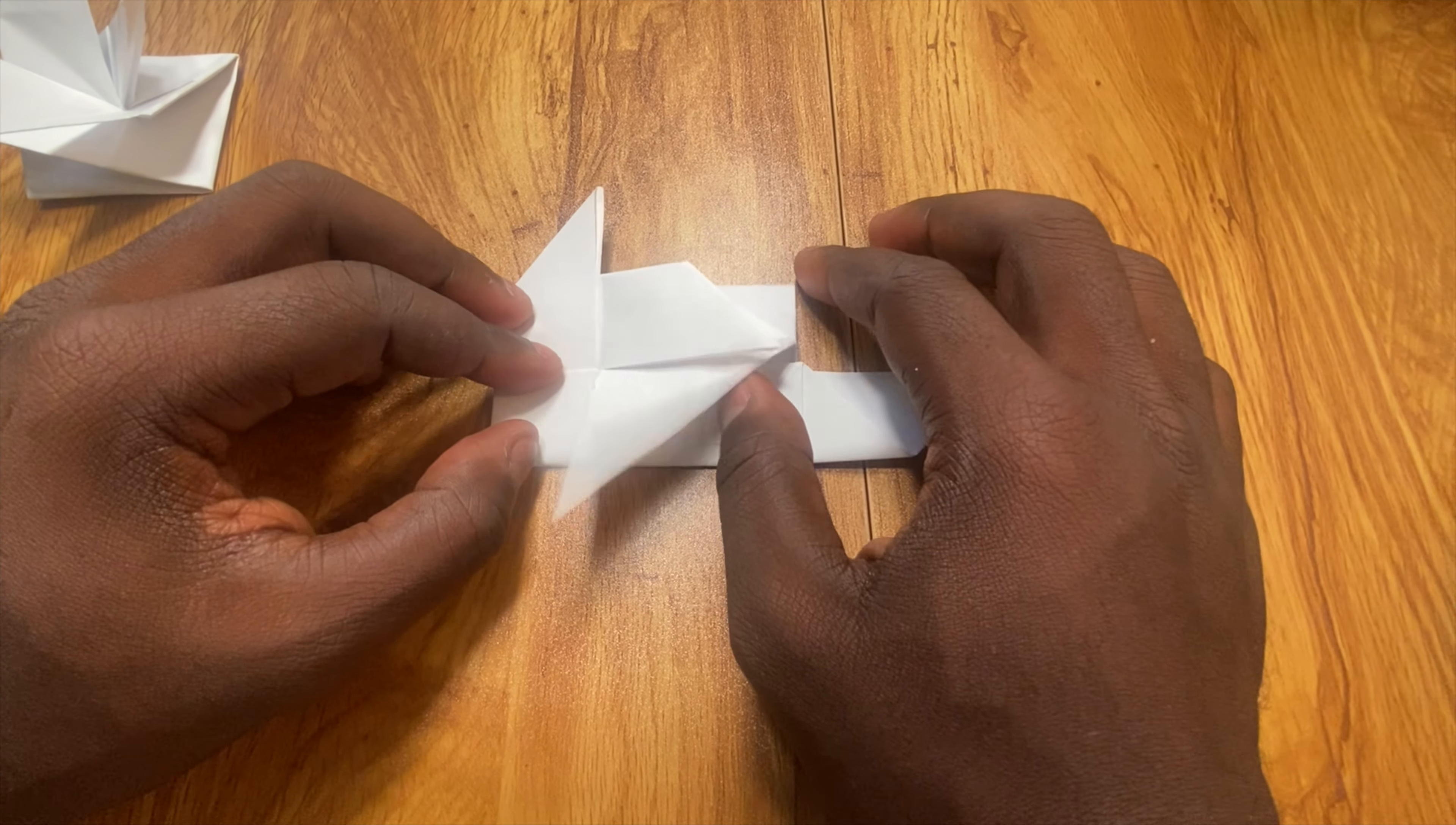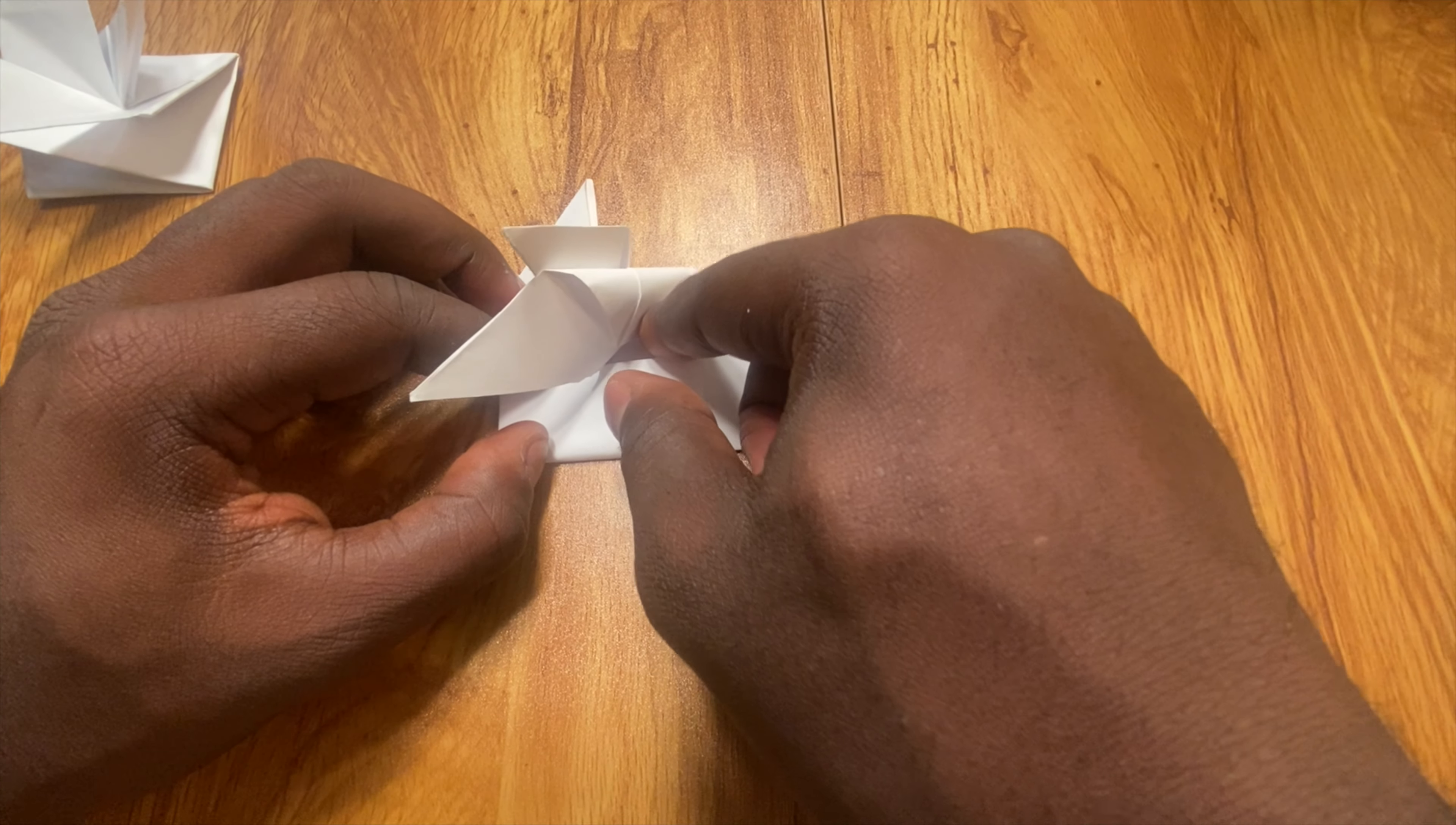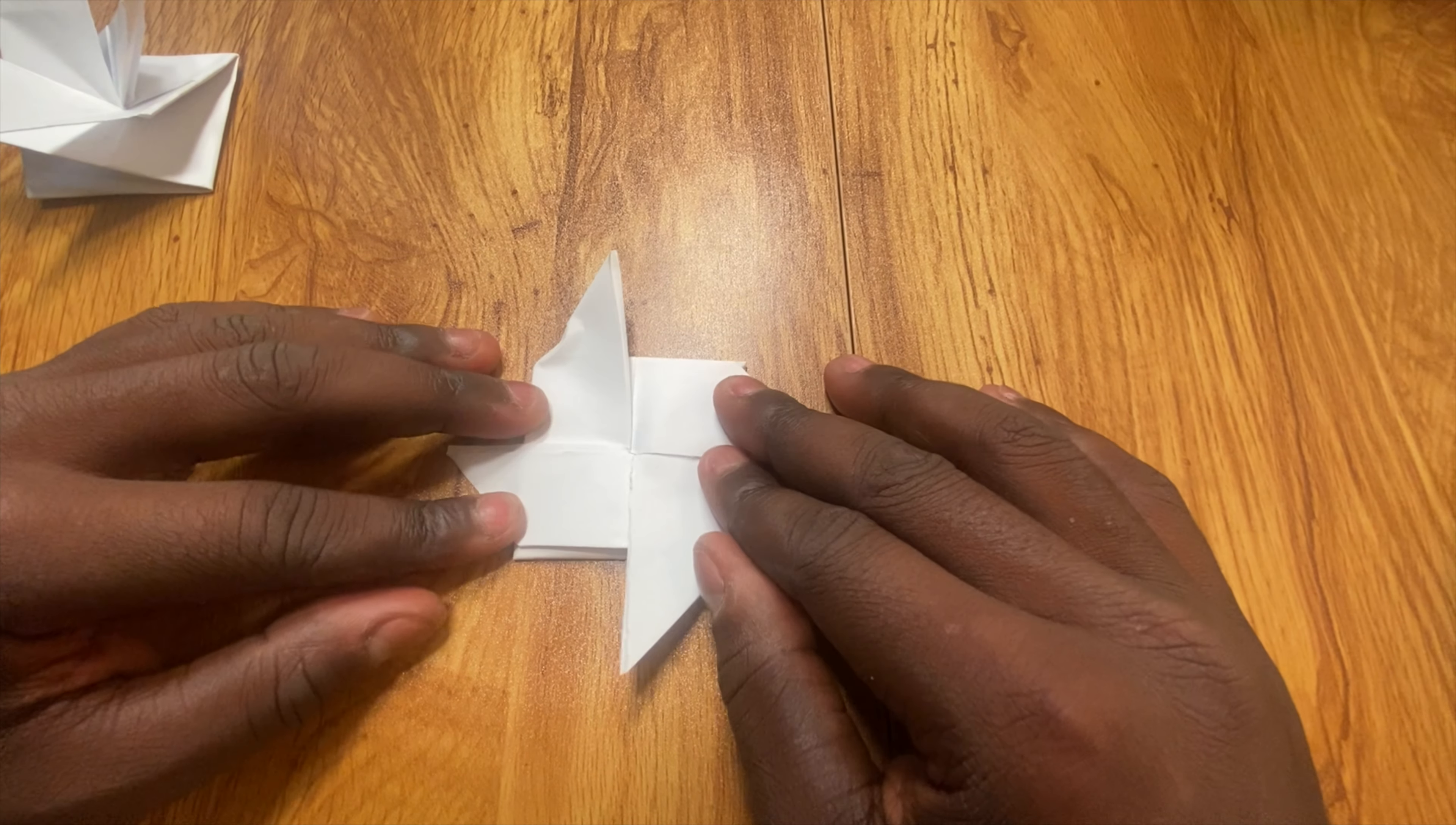And then to make your final fold, what you're going to do is lift up this flap as far as it can go up. And then you see this corner, you're going to push this corner in as far as it can go inside. Then as you fold this flap all the way over, you'll tuck that under and fold it flat down.